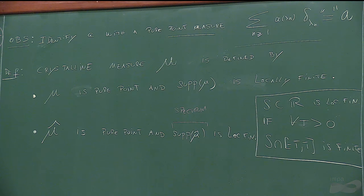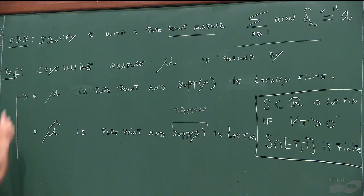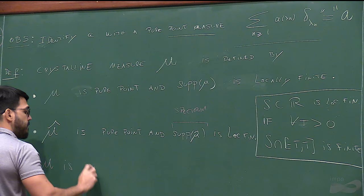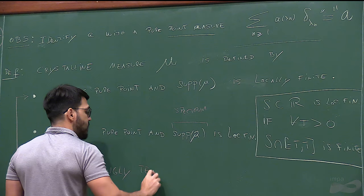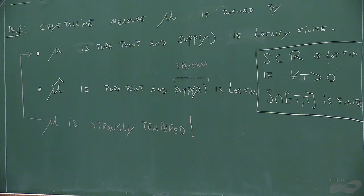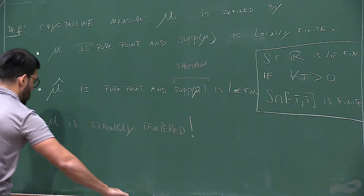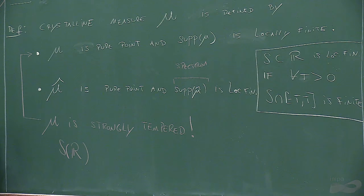You might complain that you don't know how to compute the Fourier transform of an arbitrary measure—it might not be well defined. So I have to say something more: I'm going to ask that mu is strongly tempered. Strongly tempered means that if you take the Schwarz functions, this is the same as saying it's contained in L1 of the total variation of the measure, which means you can integrate Schwarz functions.